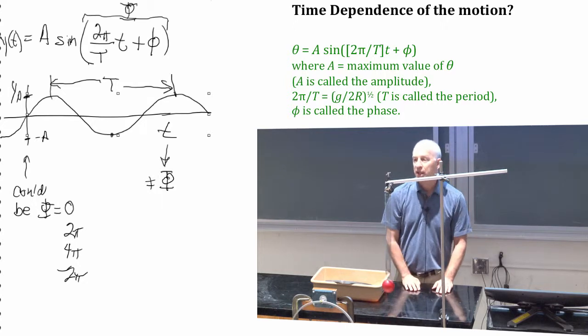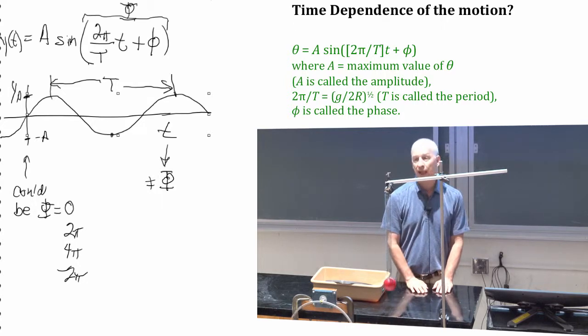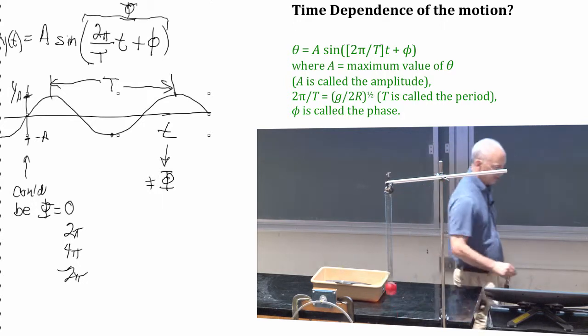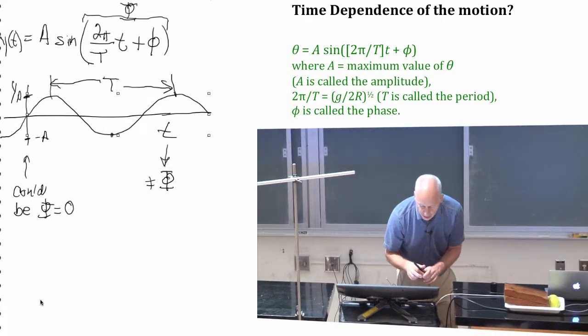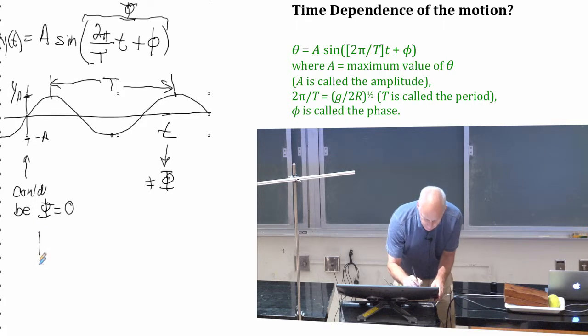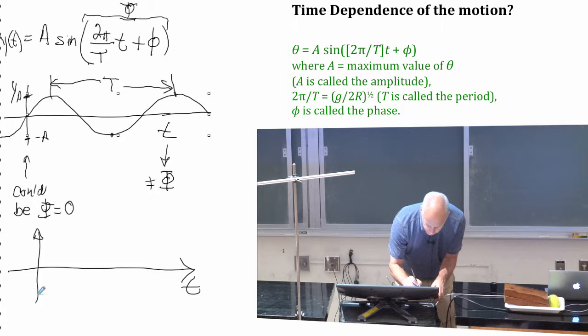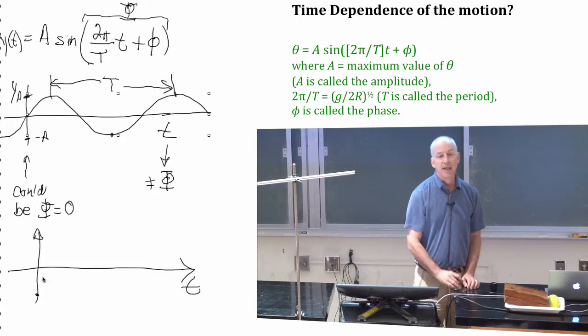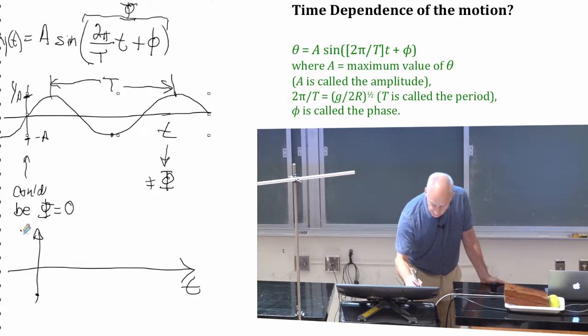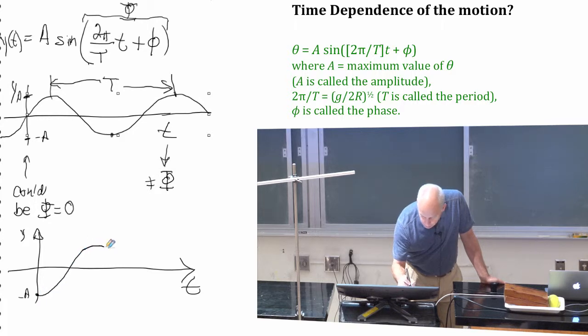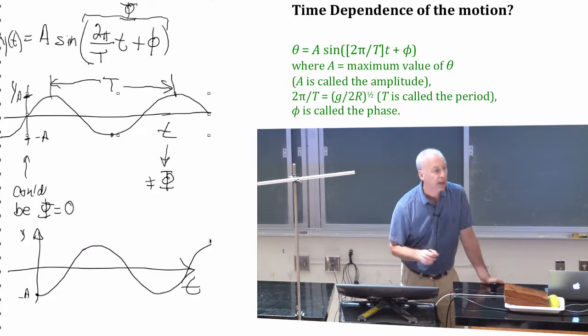Maybe I want to call it when it's all the way at the bottom, and I've just let go. If t equals zero is all the way at the bottom, and I've just let go, then it's at minus a, because it's all the way at the bottom.